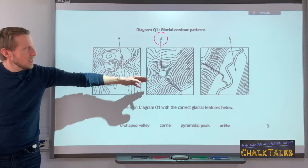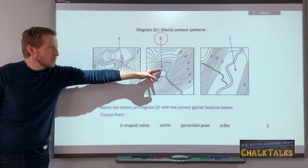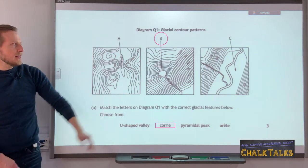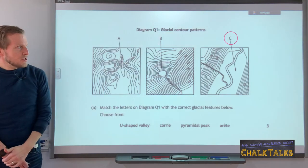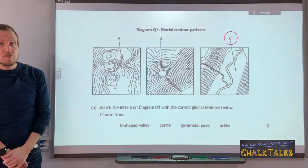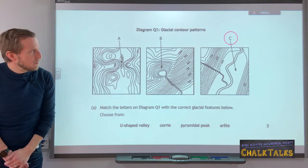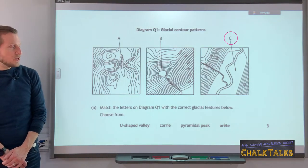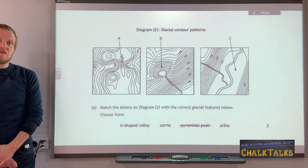Feature B showing the Corrie may actually be quite close on your map to feature A. Feature C shows a big wide flat area with no contours, with a river running diagonally through it and contours very close together rising from 500 meters up to above 700 meters, indicating steep valley sides — this feature would be the U-shaped valley. In this example therefore the pyramidal peak is the false answer.